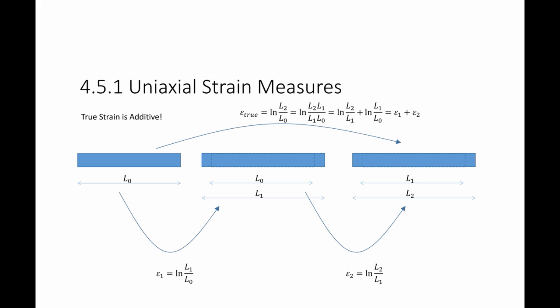If I call the strain from L0 to L1, if I call it epsilon 1, this is equal to the natural logarithm of L1 over L0. The strain between this state to this state is equal to epsilon 2 which is the natural logarithm of L2 over L1. The true strain between the final state and the original state is equal to the natural logarithm of L2 over L0. Because of the properties of the natural logarithm function, I can multiply by L1 and divided by L1. This is equal to the natural logarithm of L2 over L1 plus the natural logarithm of L1 over L0. So the final strain is actually equal to epsilon 1 plus epsilon 2.